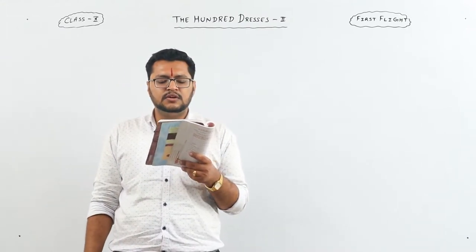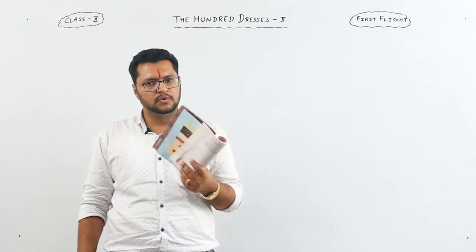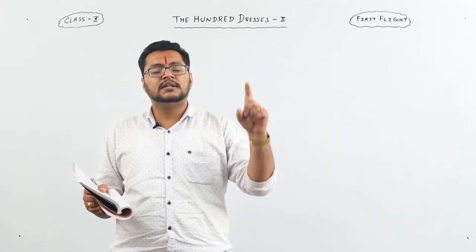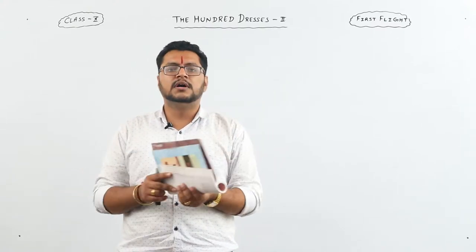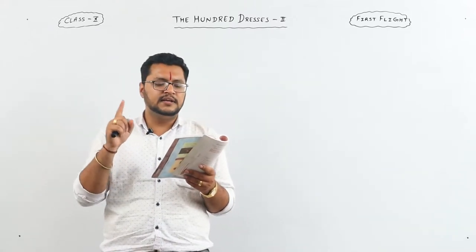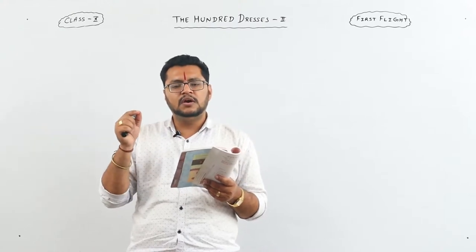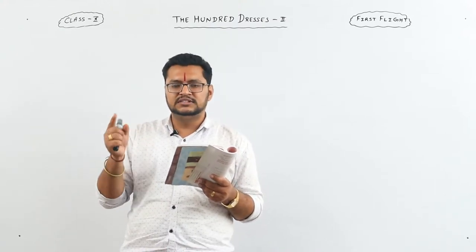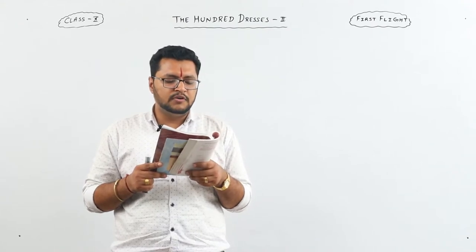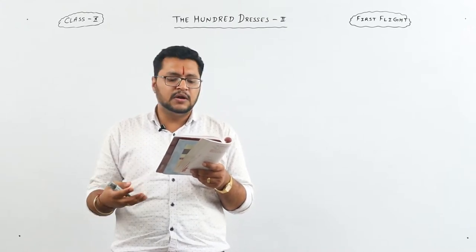While the class was circling the room, the monitor from the principal's office brought Miss Mason a note. In the last chapter, the teacher had said that all the children could walk around the class and look at Wanda's drawings. While the class was doing that — all the children were moving around looking at her drawings — the monitor brought a note for Miss Mason. Miss Mason read it several times and studied it thoughtfully for a while.